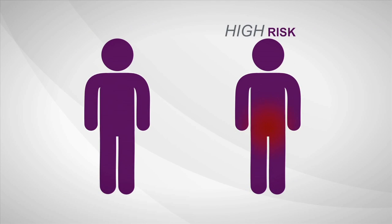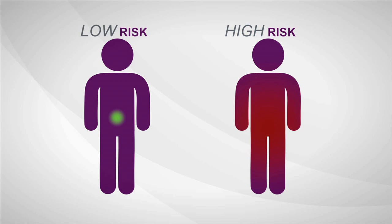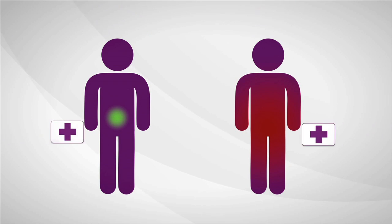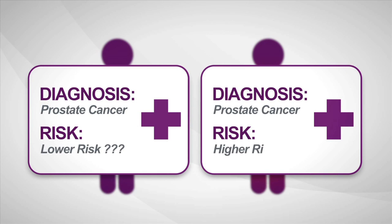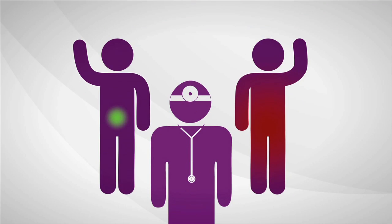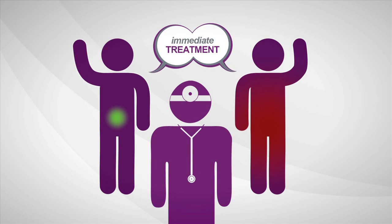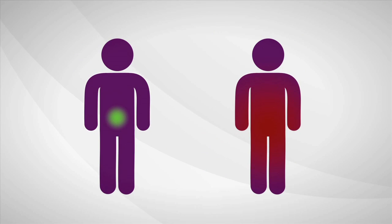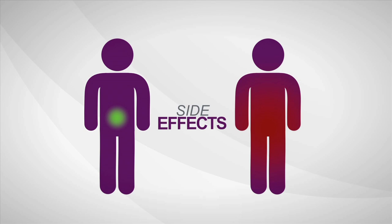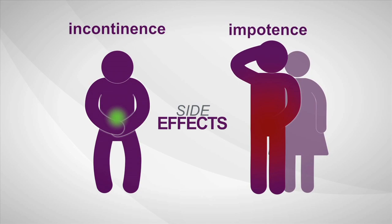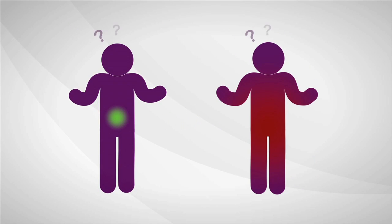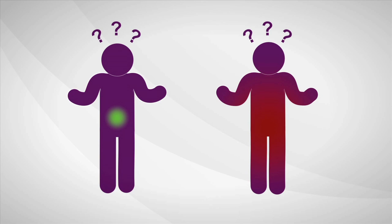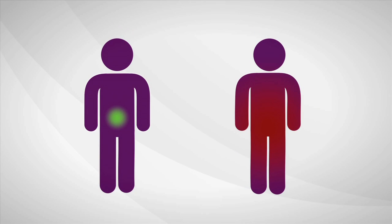Some prostate cancers are high risk, aggressive, and more likely to spread. Others are low risk and least likely to have bad outcomes. The biopsy says cancer, but current diagnostic tools provide limited information about how aggressive a man's individual disease is. So most men decide to treat prostate cancer immediately. Once treated, many men experience serious long-term side effects like incontinence and sexual impotence. Immediate treatment isn't always needed, but right now a man can't be sure if his cancer is the kind that is likely to require treatment or if he's okay to wait for now.